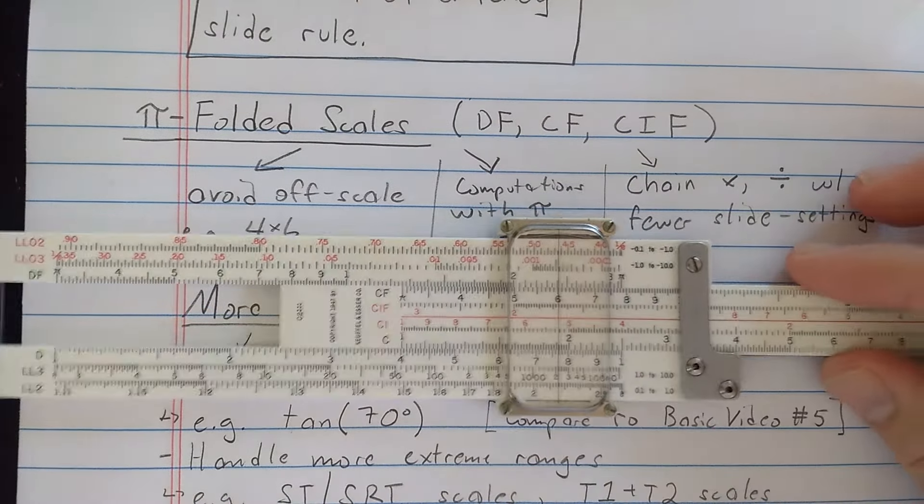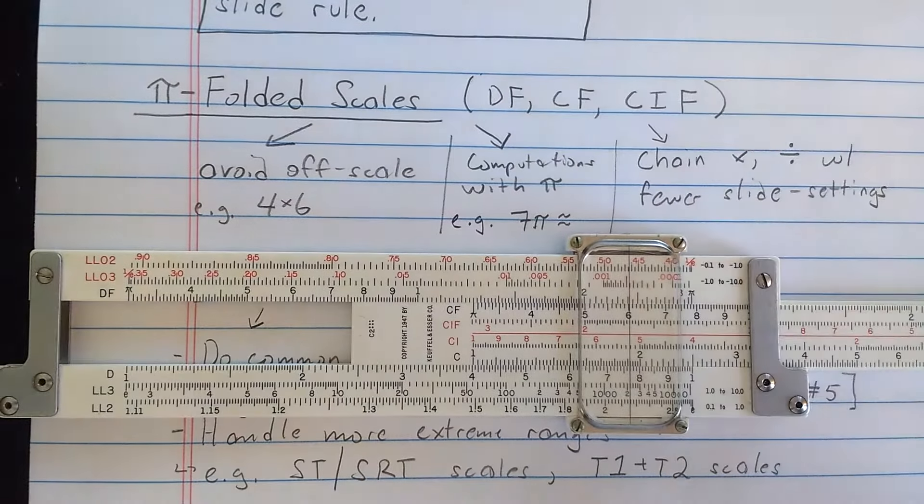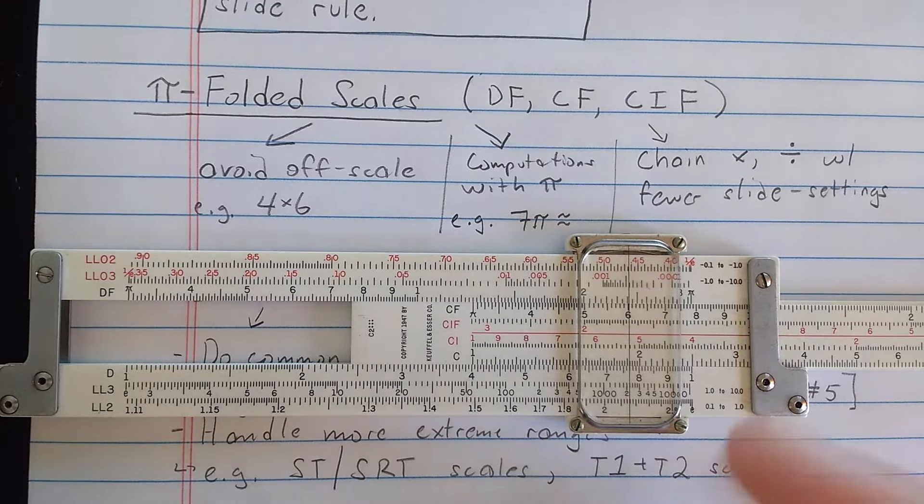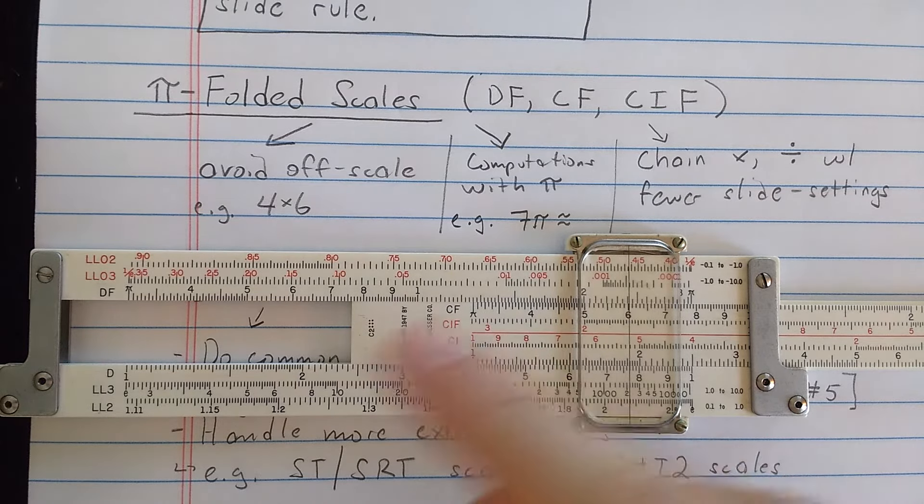This is just a taste of how you can use these folded scales, but sometimes when your calculation is off-scale on C or D, or CI, it will be on-scale on CIF, CF, or DF.